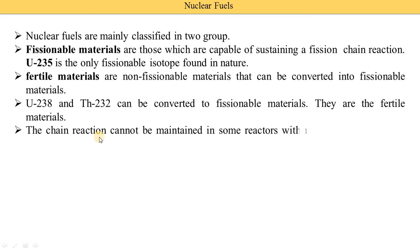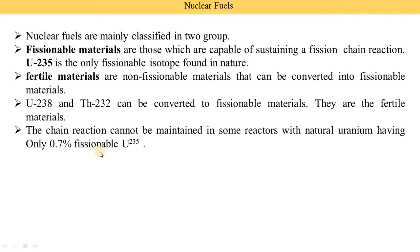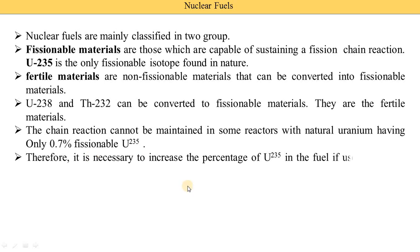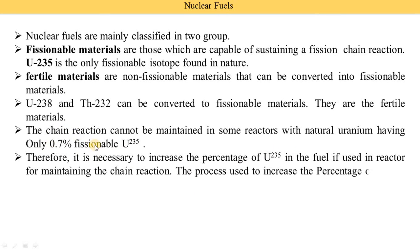Chain reactions cannot be maintained in some reactors with natural uranium having only 0.7% fissionable uranium. Therefore, it is necessary to increase the percentage of Uranium-235 in the fuel for maintaining the chain reaction. This process of increasing the percentage of Uranium-235 is known as the enrichment process.